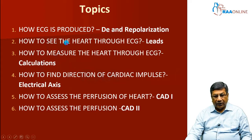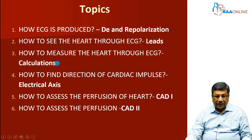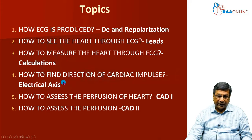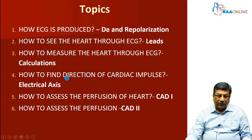The third topic is how to measure the heart through the ECG — calculations and measurements of the various ECG waveforms. The fourth topic is how to find the direction of the cardiac impulse, which is the calculation of the electrical axis — in other words, determining in which direction the net cardiac impulse is traveling inside the heart. These are the four topics we are going to cover in the basics.